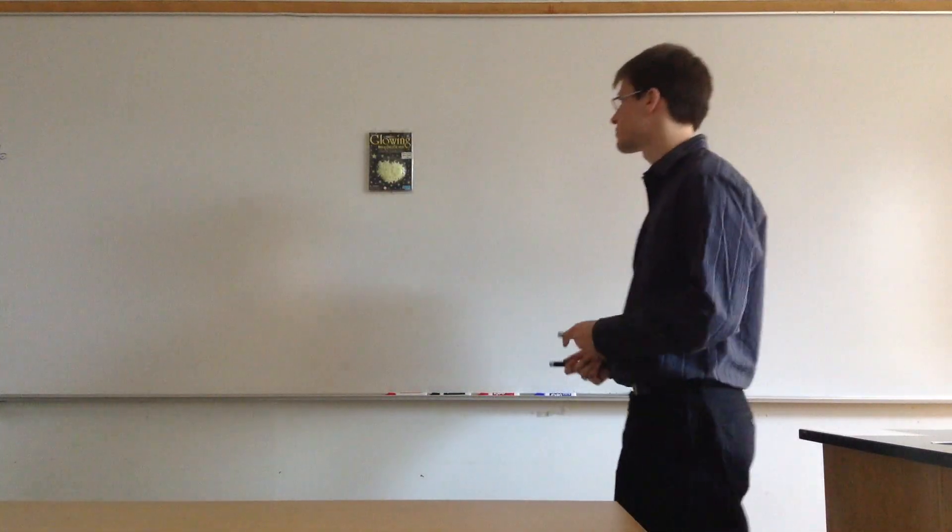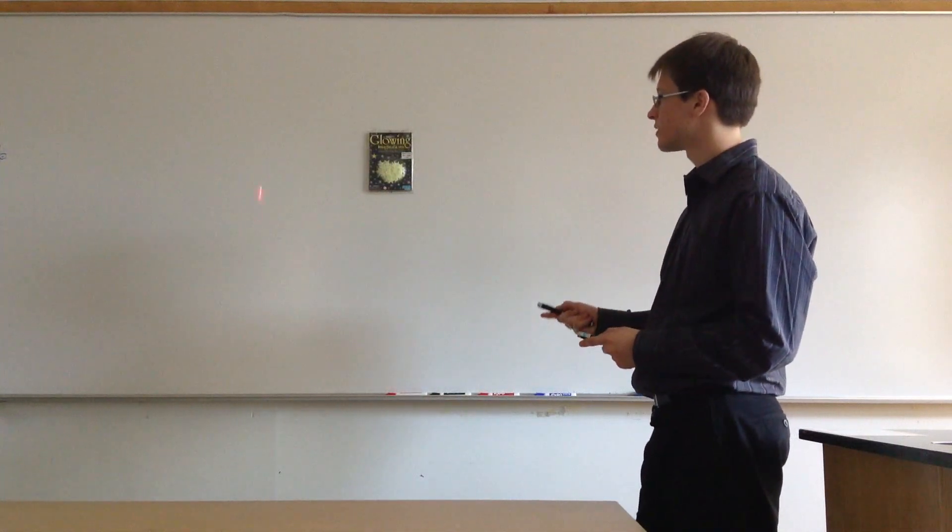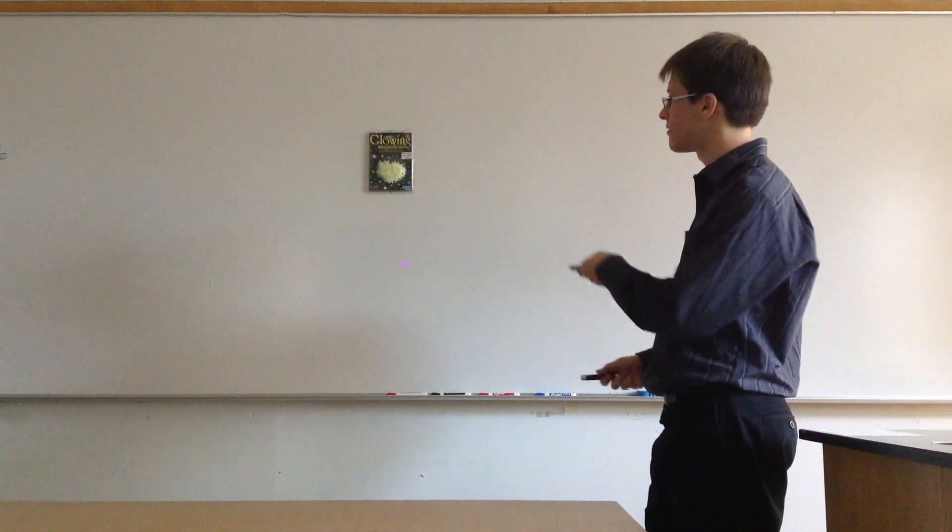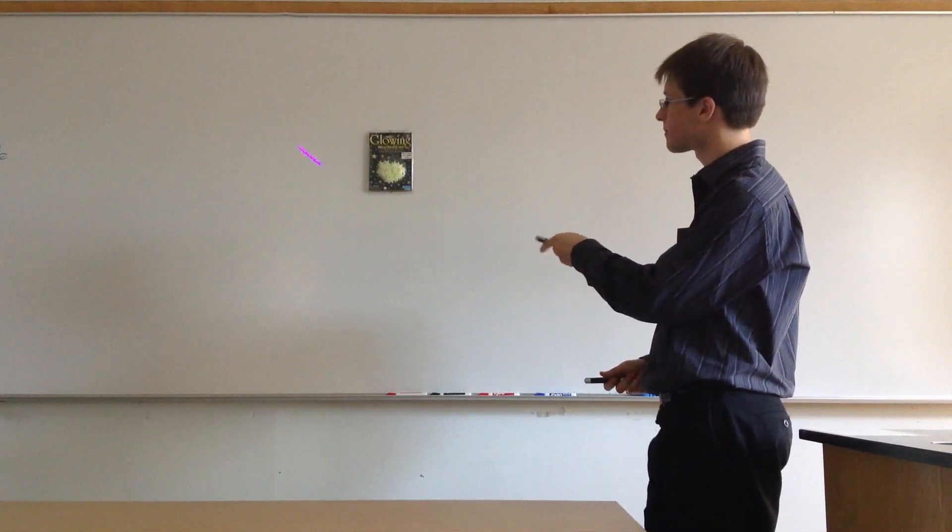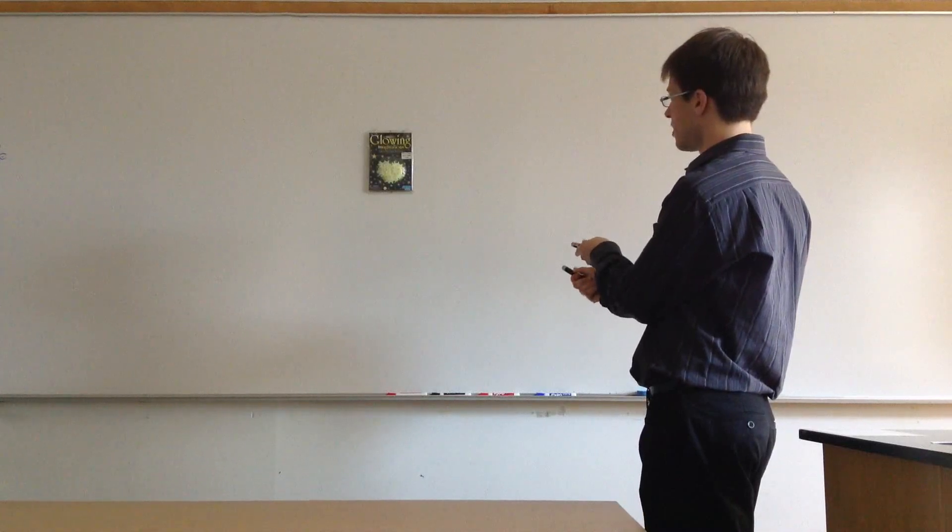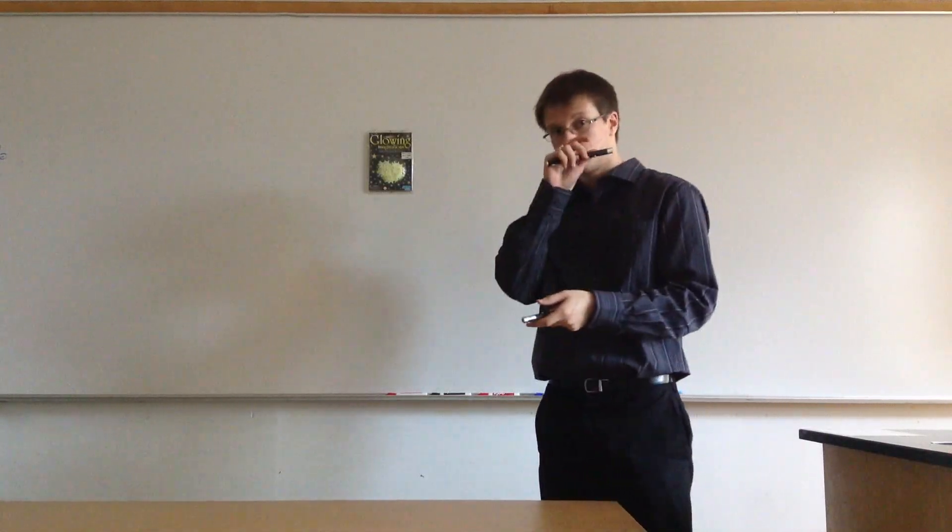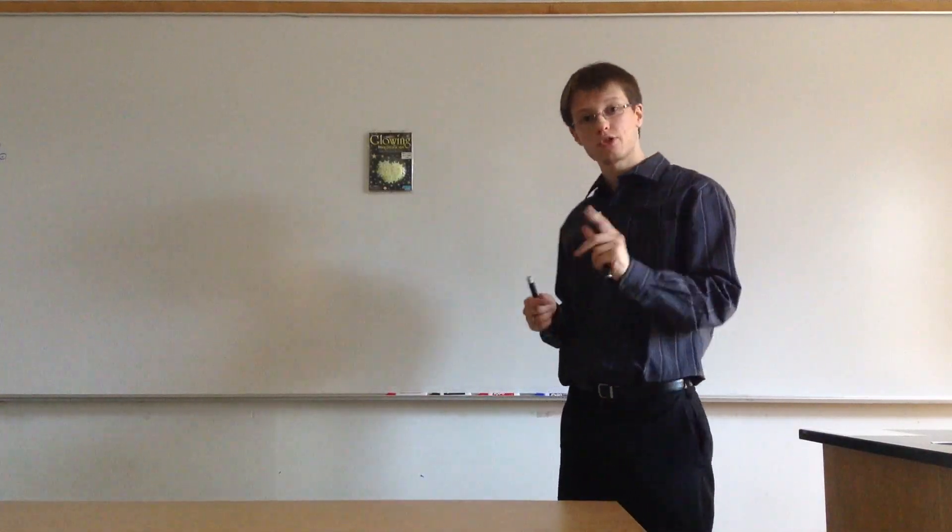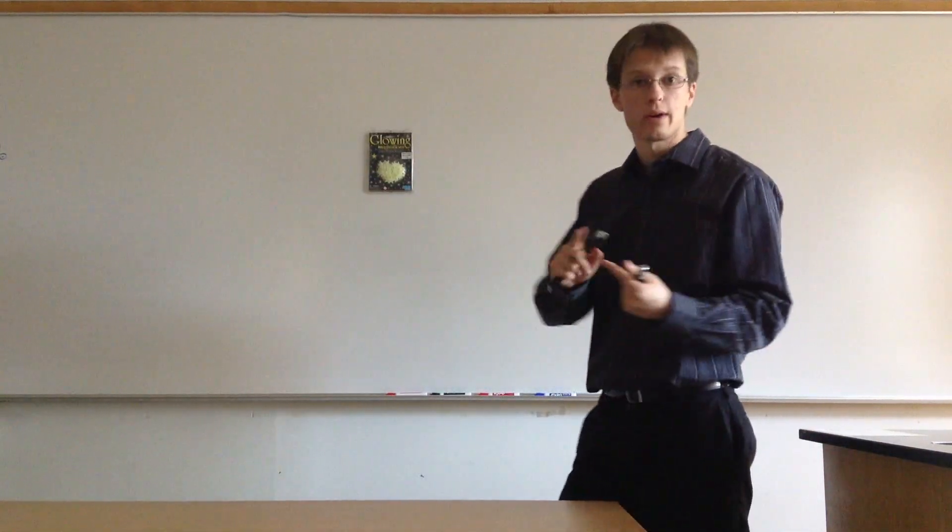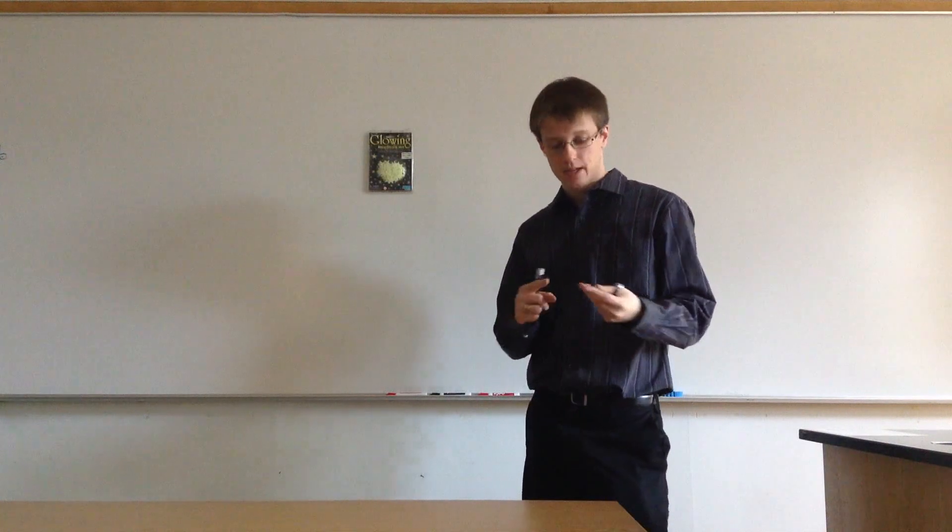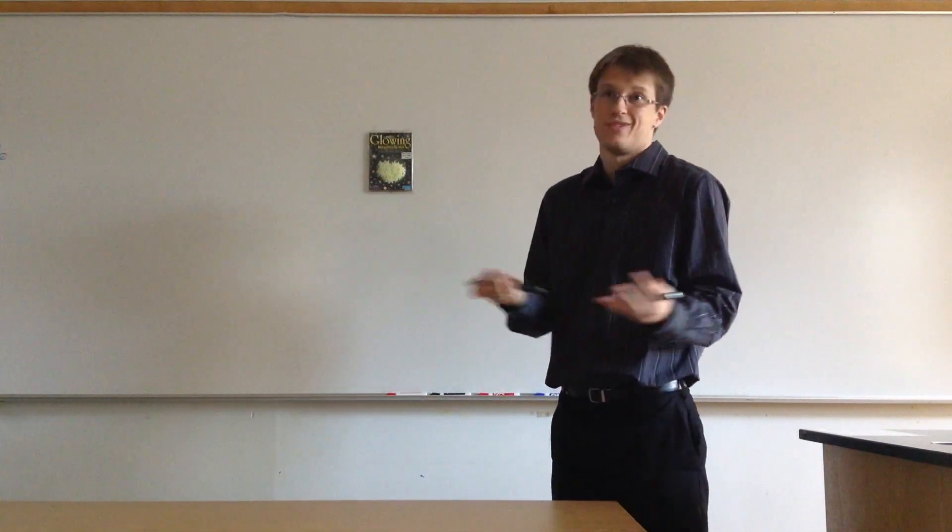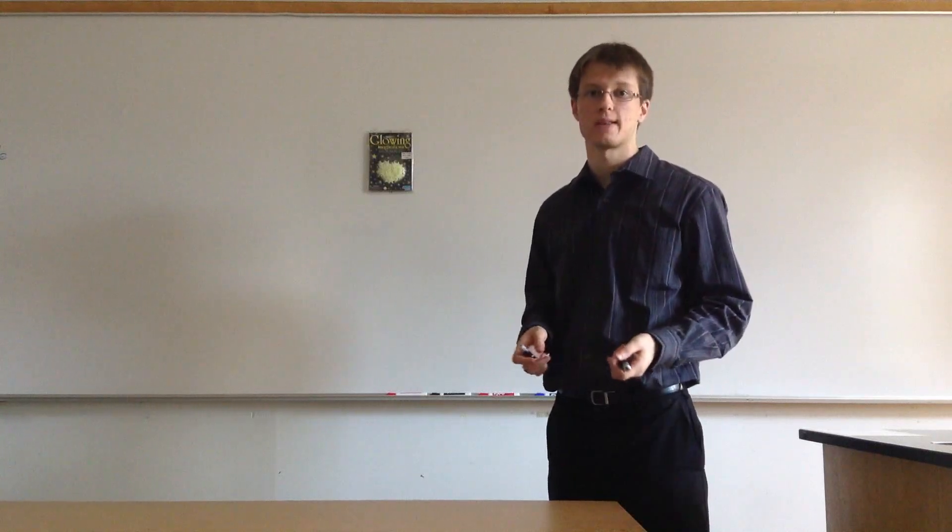So I have a few laser pointers here. I have a red laser, I have a green laser, and I have a bluish-violet laser. I'm going to shine all three of these lasers on the stars, and we're going to see what happens. You should try to predict at this point what you think is going to happen. Should the stars glow whatever color of light is shown on them, perhaps nothing will happen at all, or perhaps they'll glow just like we expect normally with white light.